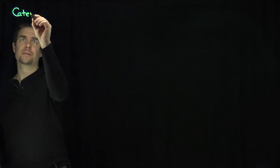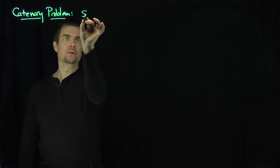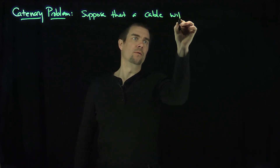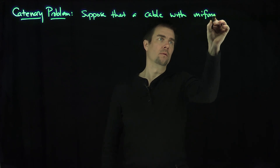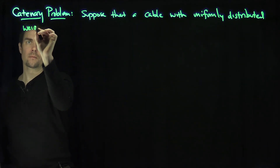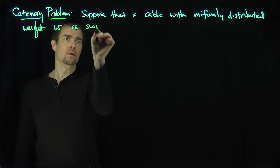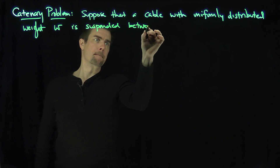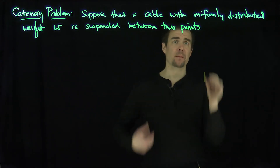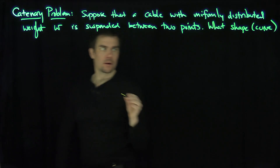The catenary problem is a classic problem in mechanics. It states the following: suppose that a cable with a uniformly distributed weight W is suspended between two points. What shape does the cable make? In particular, what curve does the cable make?